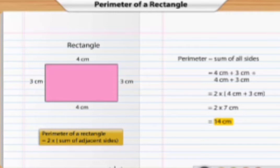Children, the perimeter of a rectangle formula is nothing but 2 times length plus breadth. So L plus B. Here our length is 4 cm, our breadth is 3 cm. So 2 multiplied by 4 cm plus 3 cm gives us 7 cm. So 2 times 7 equals 14 cm.